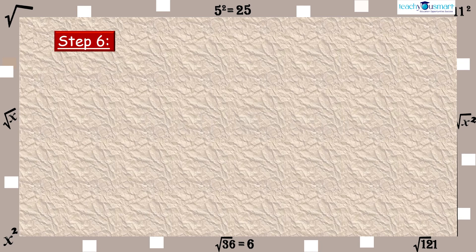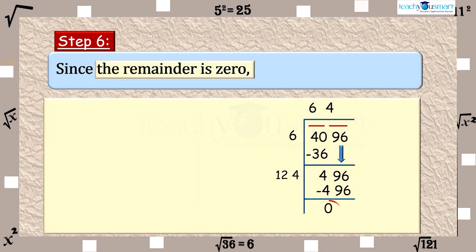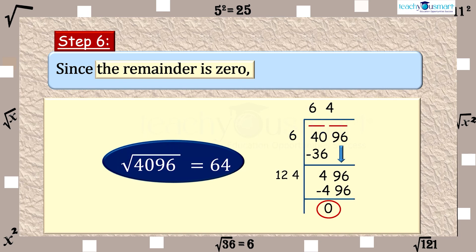Step 6: Since the remainder is 0, the square root of 4096 is 64.